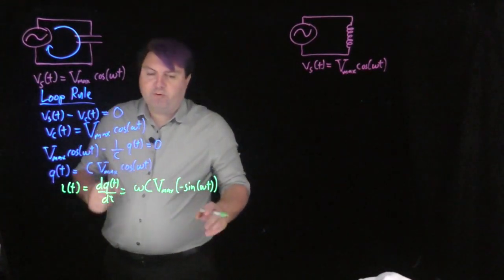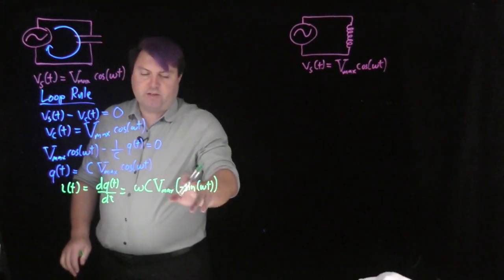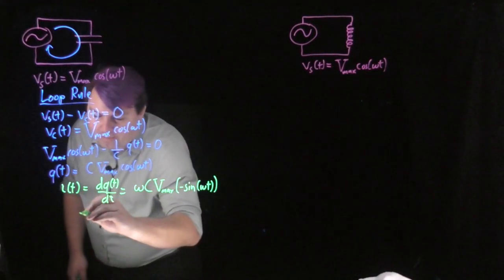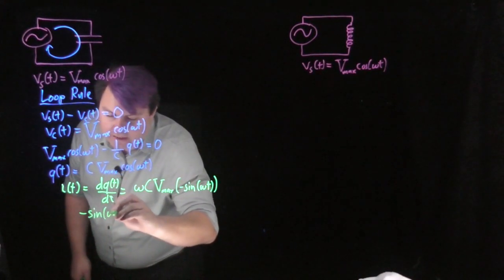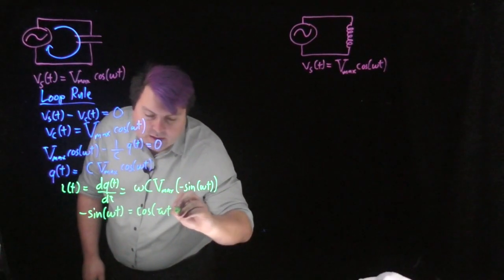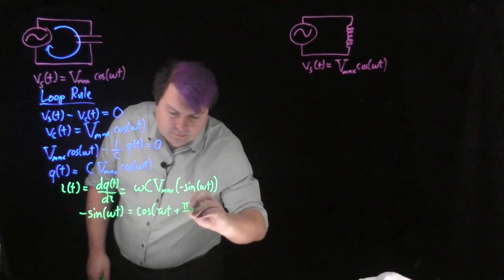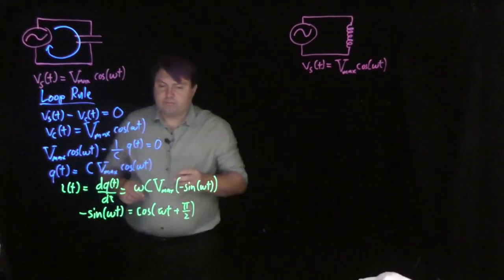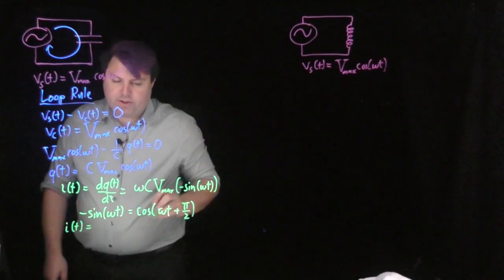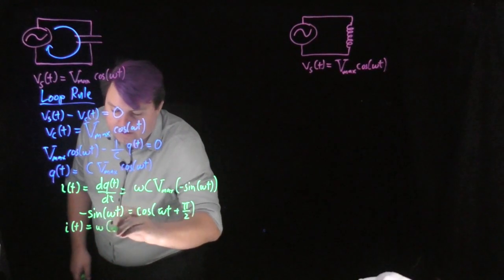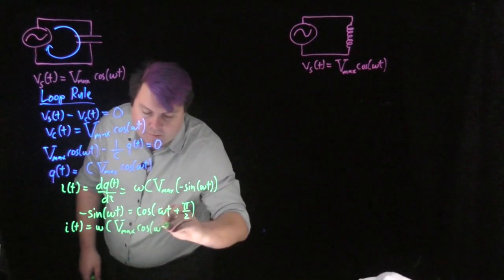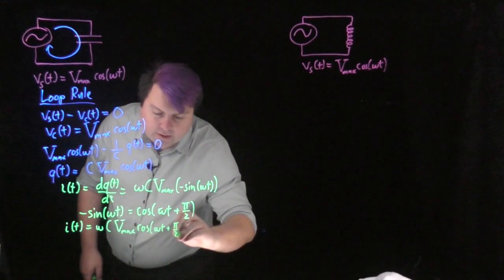This is looking great, except we want to know the relative phase of cosine with negative sine. Pulling back from a bit of trig, we remember the relationship that negative sine(ωt) is equal to cosine(ωt + π/2). This gives us that the current as a function of time is ωC·V_max·cosine(ωt + π/2).